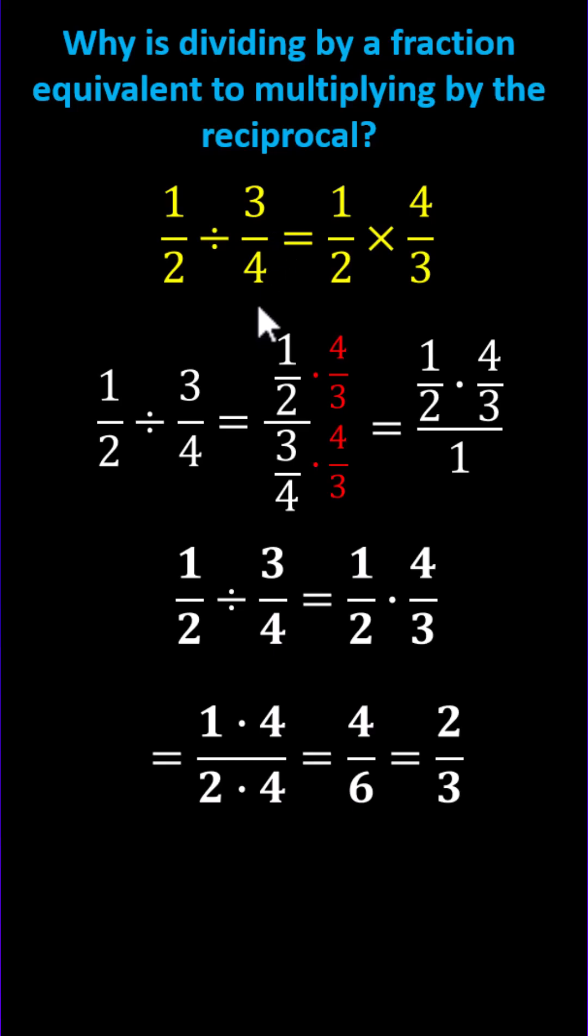We now know that 1 half divided by 3 fourths equals 1 half times 4 thirds, which equals 2 thirds. I hope you found this helpful.